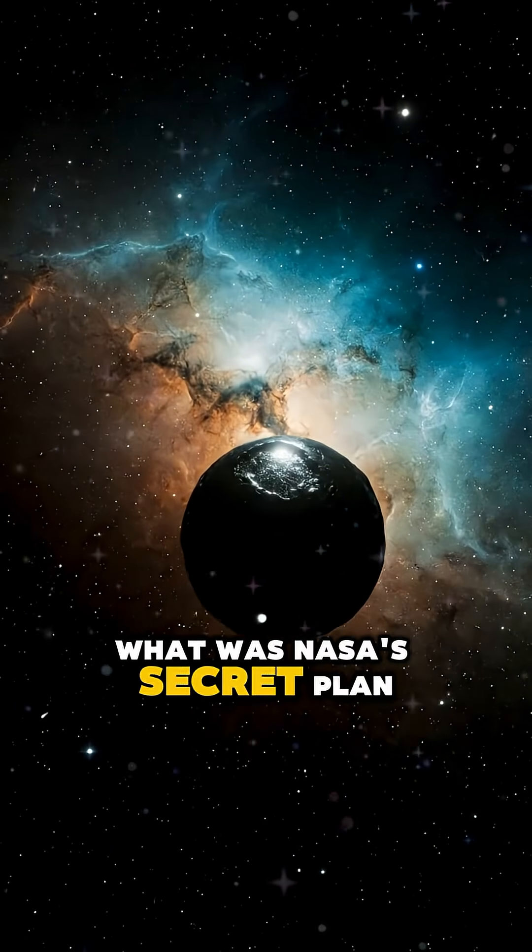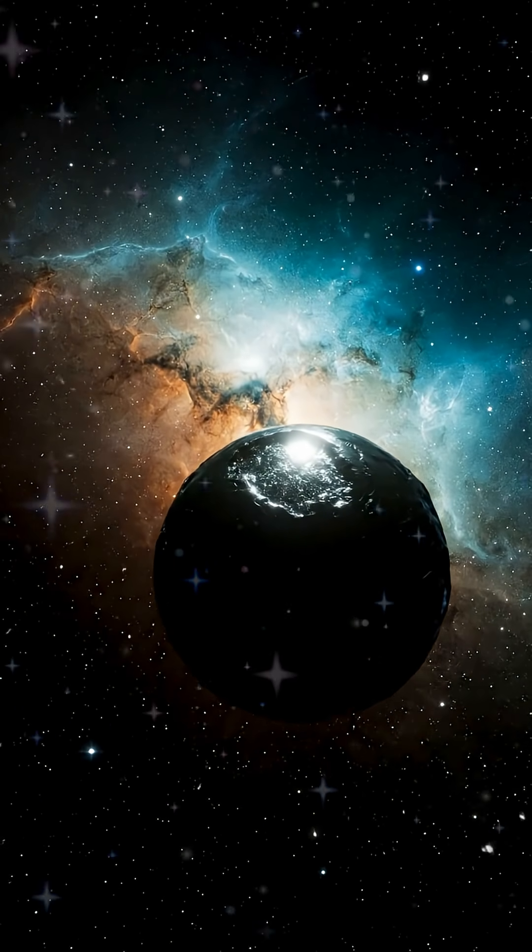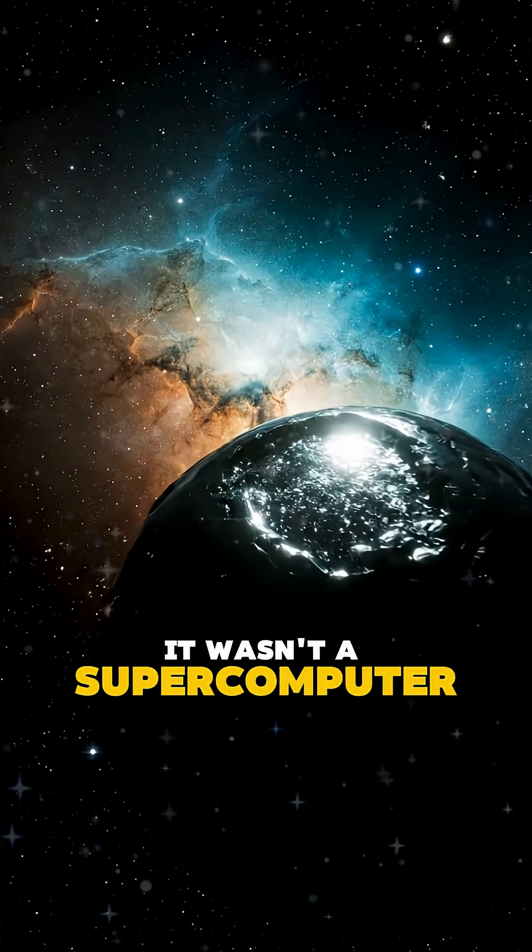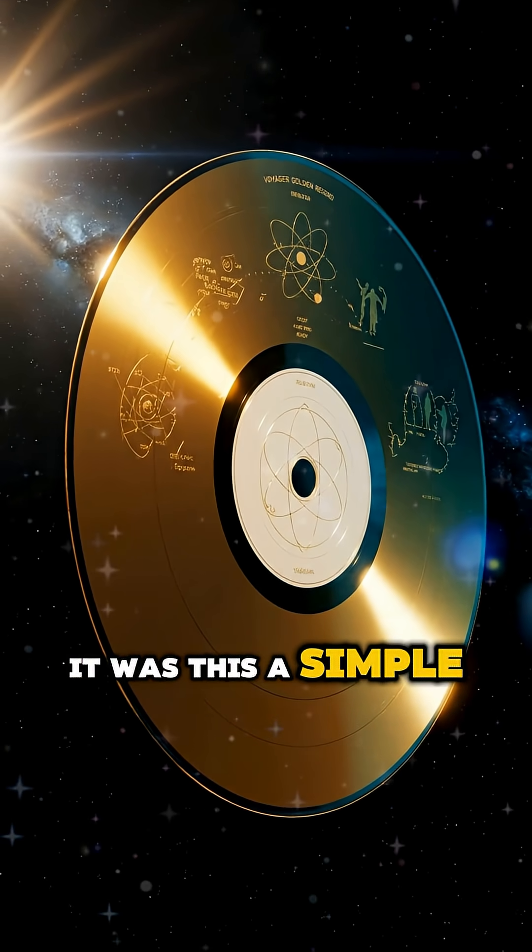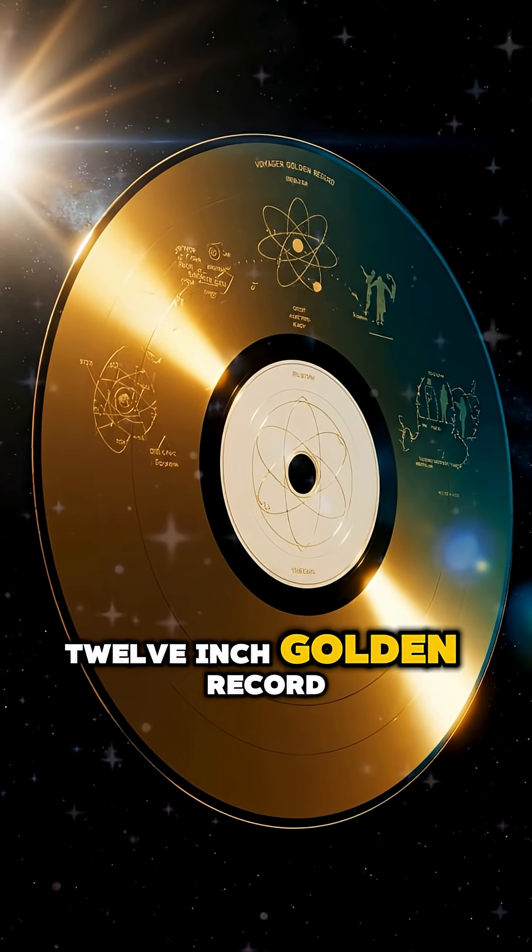What was NASA's secret plan for immortality? It wasn't a supercomputer. It wasn't a complex blueprint. It was this, a simple 12-inch golden record.